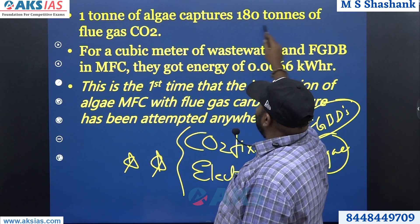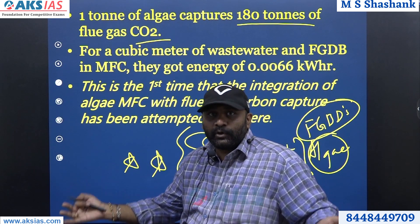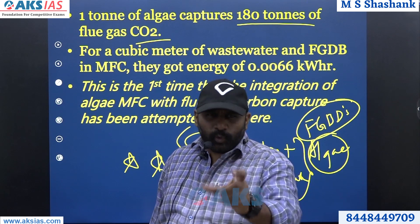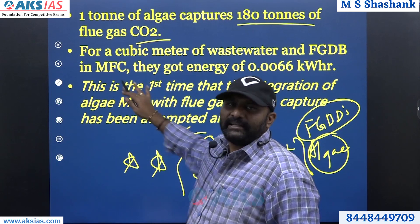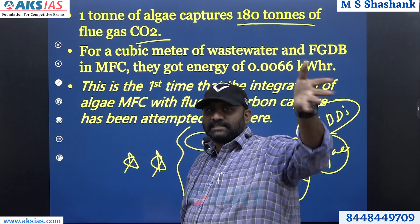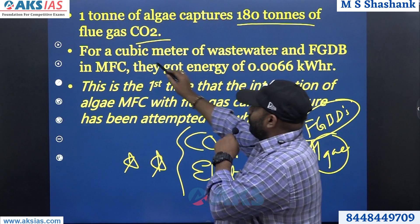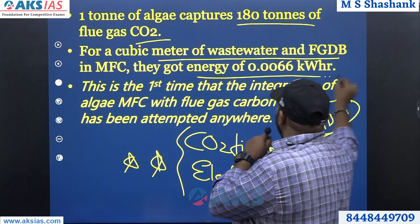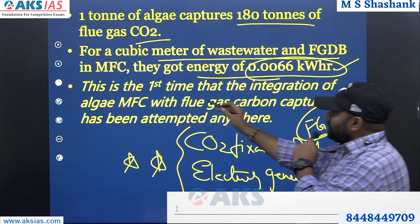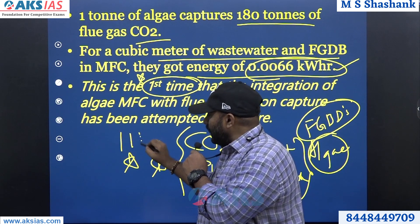One ton of algae captures 180 tons of carbon dioxide. The only issue is producing that algae requires a lot of area — that is the only challenge. Otherwise, this is a fantastic mechanism to capture carbon dioxide. It is also a fantastic way of generating electricity. For a cubic meter of waste water with FGDBs, 0.066 kilowatt-hours of electricity is generated. This is the first time this mechanism has been introduced, at IIT Jodhpur.